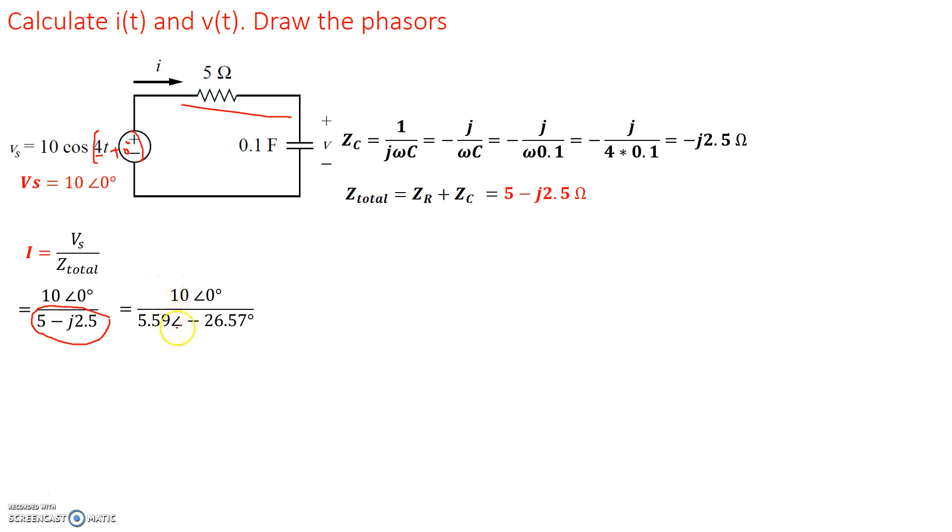Now we have 10∠0 degrees divided by 5.59∠-26.57 degrees. Now when phasors divide, the magnitude divides. So the magnitude of this is 10 divided by 5.59, which is going to be about 1.789 to be exact. And the angle, since it's division, 0 degrees. So the resulting angle is basically 0 degrees minus this angle in the bottom. So we end up with 1.789 as the magnitude and 26.57 degrees as the angle, phase angle. And the unit is, of course, amps.